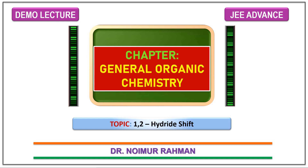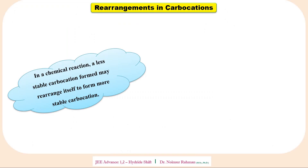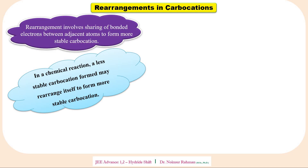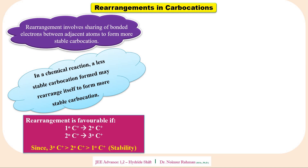Hello students, today we are going to learn about 1,2-hydride shift, which is a part of carbocation rearrangements. In a chemical reaction, a less stable carbocation formed may rearrange itself to form a more stable carbocation. Rearrangements involve sharing of bonded electrons between adjacent atoms to form more stable carbocations.